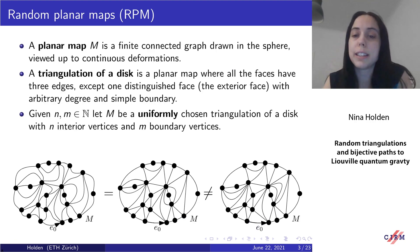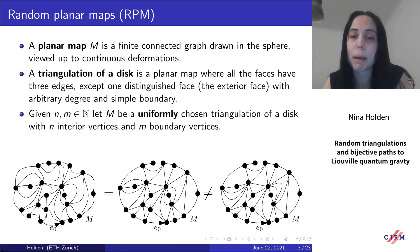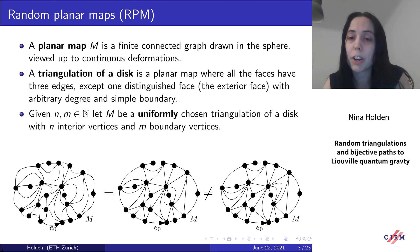I want to start by introducing these two models for random surfaces, beginning with planar maps. A planar map is a finite connected graph drawn on the sphere, viewed modulo continuous deformations. For example, the middle and the left planar maps in the figure are considered to be the same, since we can get one from the other by applying a continuous deformation. The middle and the right planar maps are not considered the same — as graphs they are the same, but the planar embedding is different.